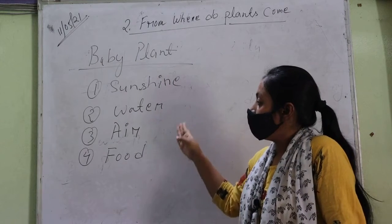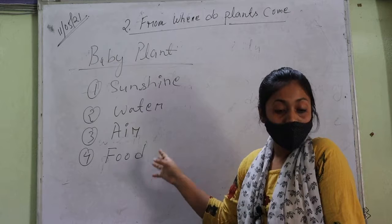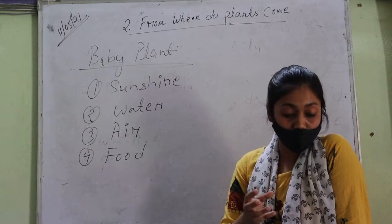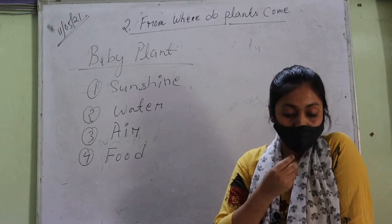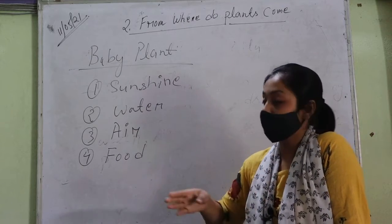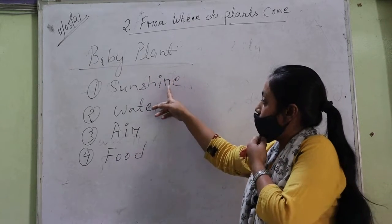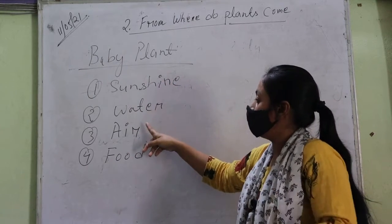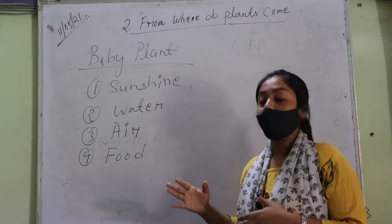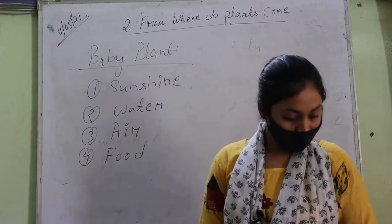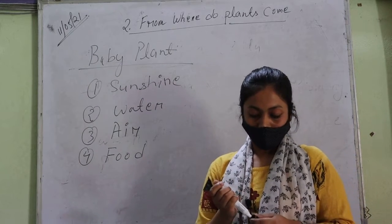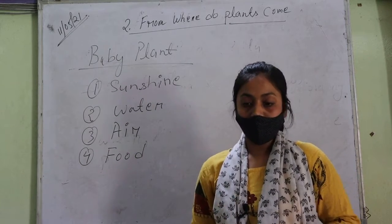Baby plant ko grow karne ke liye food chahiye. The seed contains food, and the soil also gives food to the baby plant. With the help of these four - sunshine, water, air, and food - the seed grows into a baby plant. Hope you all understood.